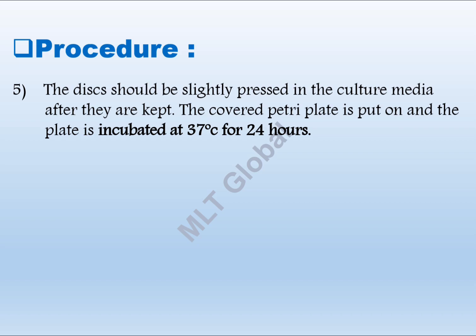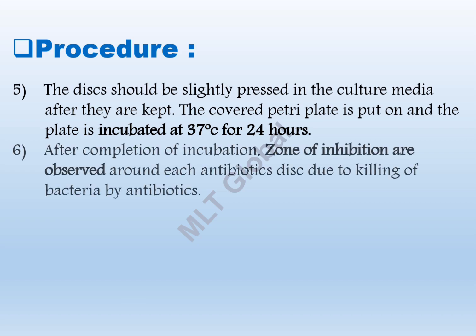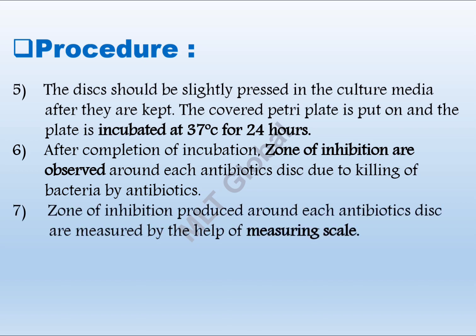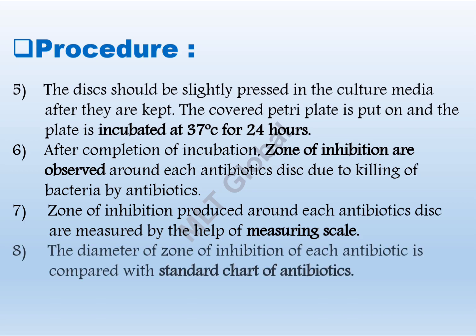The discs should be slightly pressed into the culture media after they are placed. The covered Petri plate is then incubated at 37°C for 24 hours. After completion of incubation, zones of inhibition are observed around each antibiotic disc due to killing of bacteria. The zones of inhibition around each antibiotic disc are measured using a measuring scale, and the diameter of each zone is compared with the standard chart of antibiotics.